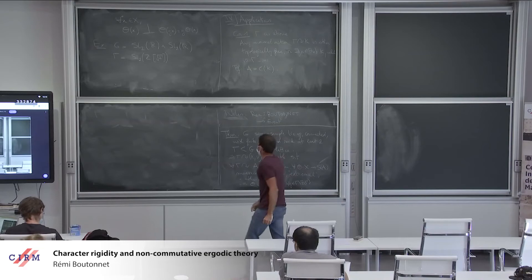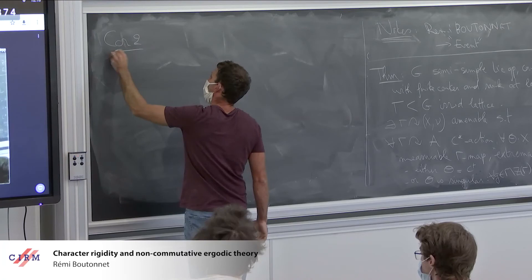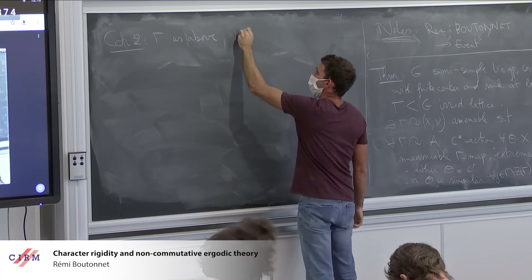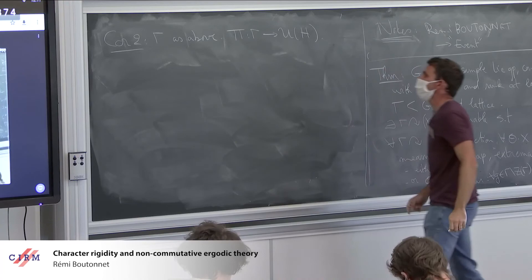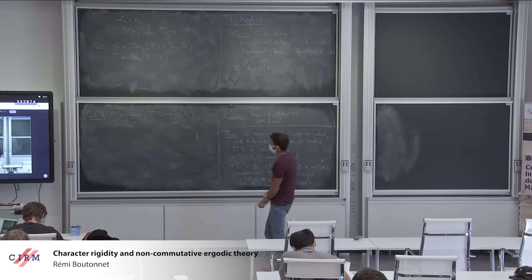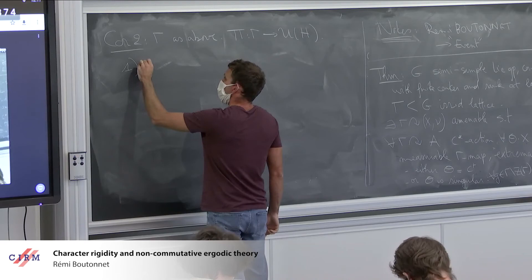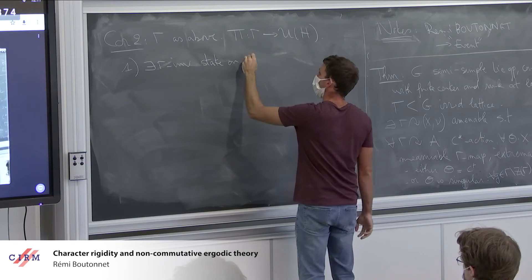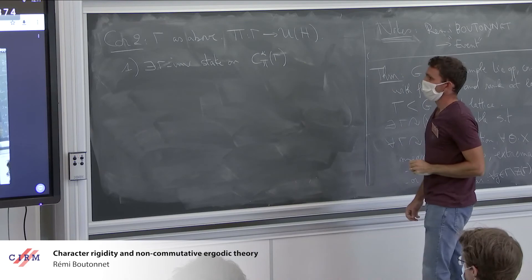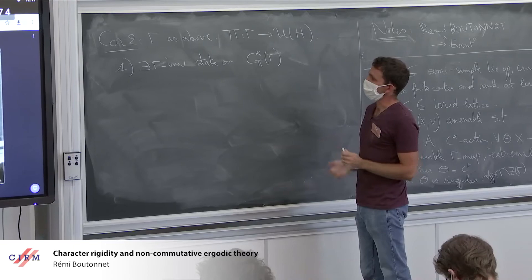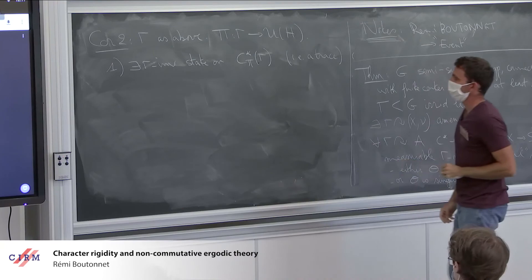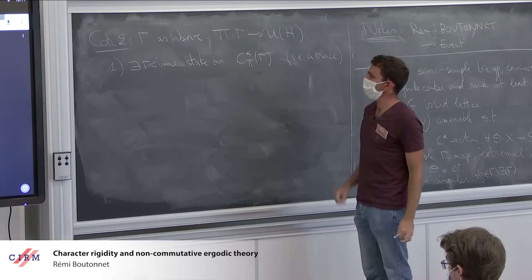I put characters in my title, so I should say a word about characters — though I'm not sure I have time to properly define what a character is. At least I will give you a statement about unitary representations. Again, Γ as in the theorem. Take π, a unitary representation of Γ. Two statements are true. The first fact is that there always exists a Γ-invariant state on the small C*-algebra generated by π(Γ).